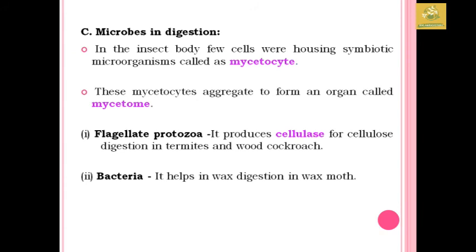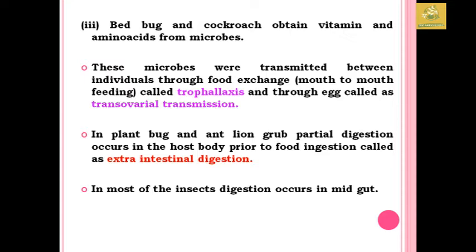Regarding microbes in digestion: in the insect body there are specialized cells called mycetocytes used for housing symbiotic microorganisms. Mycetocytes aggregate to form an organ called the mycetome. For example, flagellated protozoa produce cellulase used for cellulose digestion in termites and wood cockroaches. Bacteria help in wax digestion in wax moths. Bed bugs and cockroaches obtain vitamins and amino acids from their microbes. Microbes are transmitted between individuals through food exchange — mouth-to-mouth feeding known as trophallaxis — as well as through eggs, known as transovarial transmission.